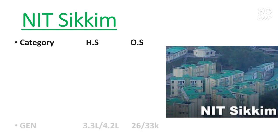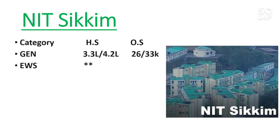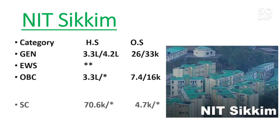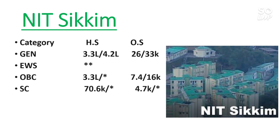Next is NIT Sikkim. General other state cutoff is 26,000–33,000. Notably, the home state cutoff here is 3.3 lakh to 4.2 lakh, meaning if you score around 60 percentile you can still get NIT Sikkim CSE if you are a home state student. For other state students you need above 96 percentile. No EWS reservation. OBC other state: male 7,400, female 16,000. SC other state: 4,700. No seat for ST category.